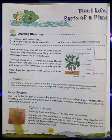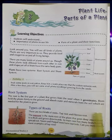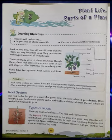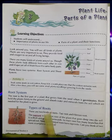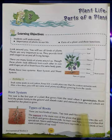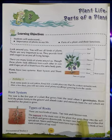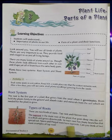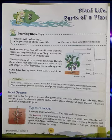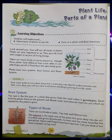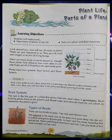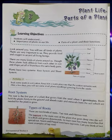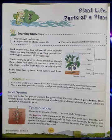Now, the root. Root is the first part of a plant that grows from the seed when it germinates — that is, when it sprouts. Roots hold the plant firmly to the ground, keeping it upright, and absorb water and minerals from the soil which are needed for the plant to grow. Now, types of roots. There are two kinds of roots: tap root and fibrous root. The tap root is the main root of the plant that goes deep into the soil; it is thick and grows downwards. Its main root has many branches that spread out. Neem and peepal trees have tap roots.